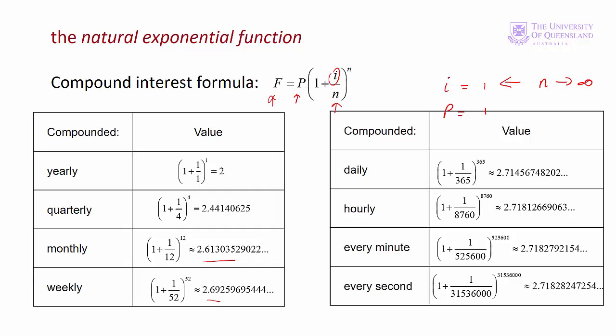So here we have 2.61, 2.69, 2.71, or 2.714, 2.718, 2.7183 approximately and so on.